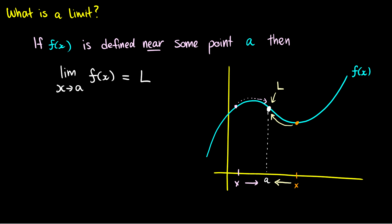Why is this important? Well, sometimes when we have these curves, we might be missing a value. If we just plug a into f of x, then we get f of a, which is our limit. But what if f of a doesn't have a value there? We can still find the limit by looking at what each side approaches — it just has to approach a similar value, it doesn't have to be defined.